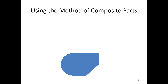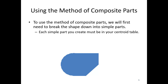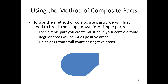More broadly about the method: say we've got the area shown below and we want to find its centroid using composite parts. Step one is to break down the shape into simpler parts, where each part must be something listed in the centroid table. Regular areas count as positive areas and holes or cutouts count as negative areas. For this shape, we'll use a semicircle for shape one, a rectangle for shape two, and a triangular cutout for shape three — which will be a negative area in our calculations.